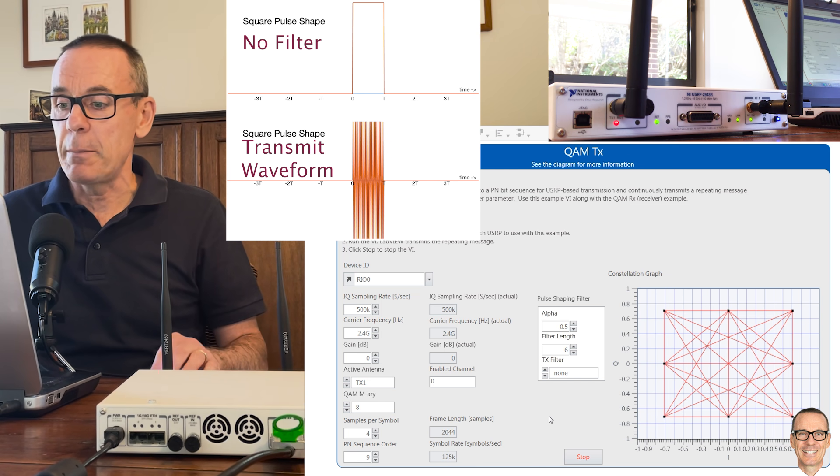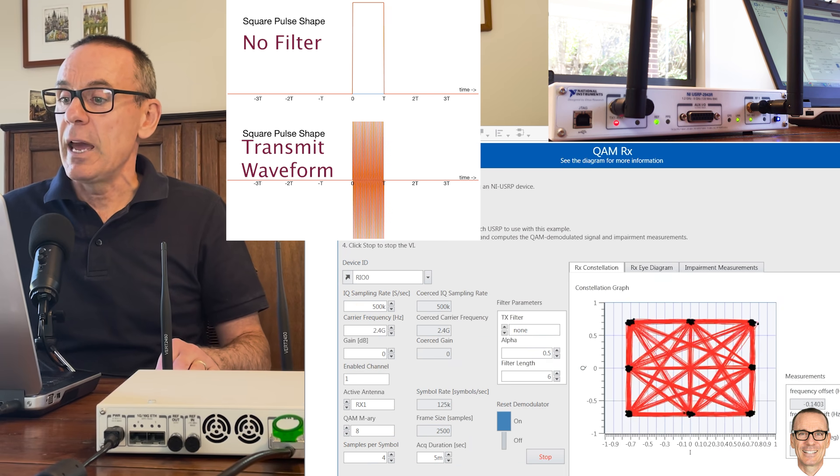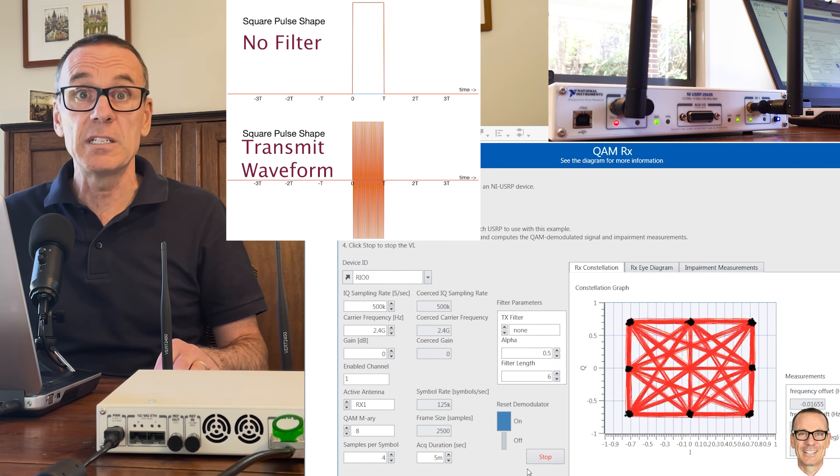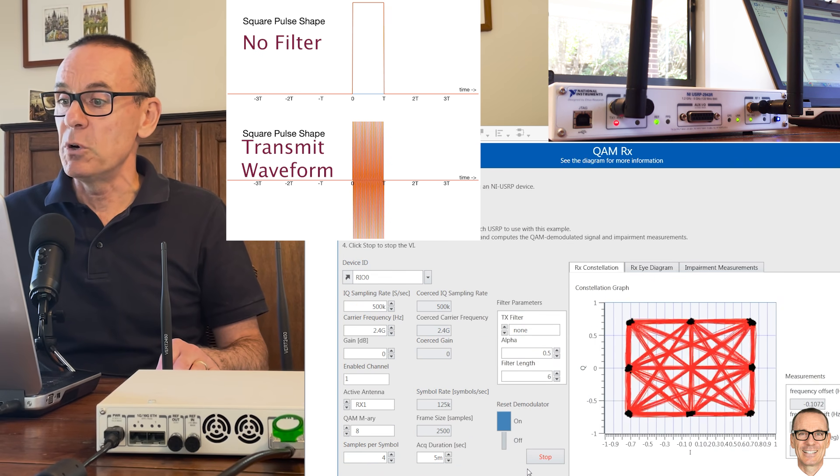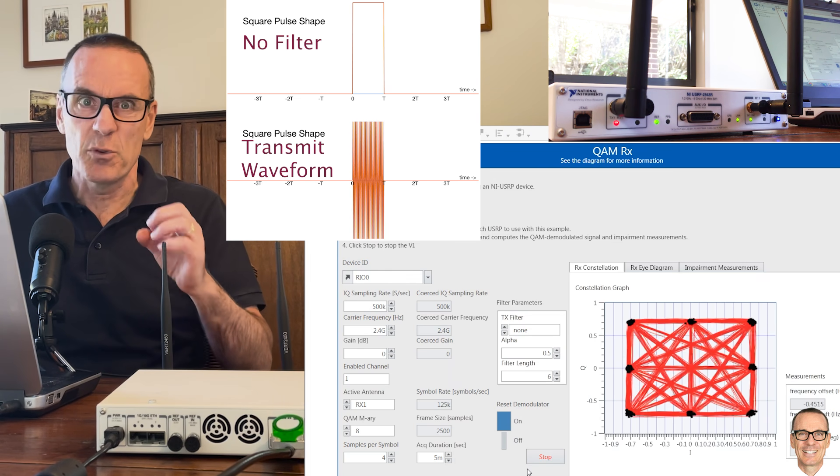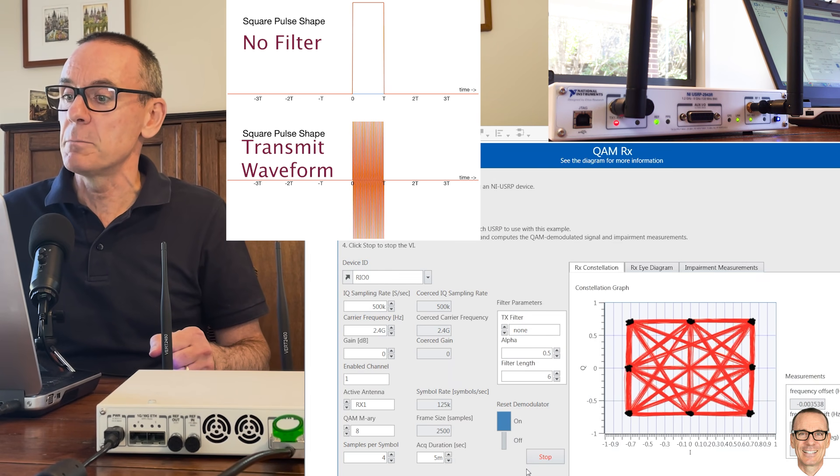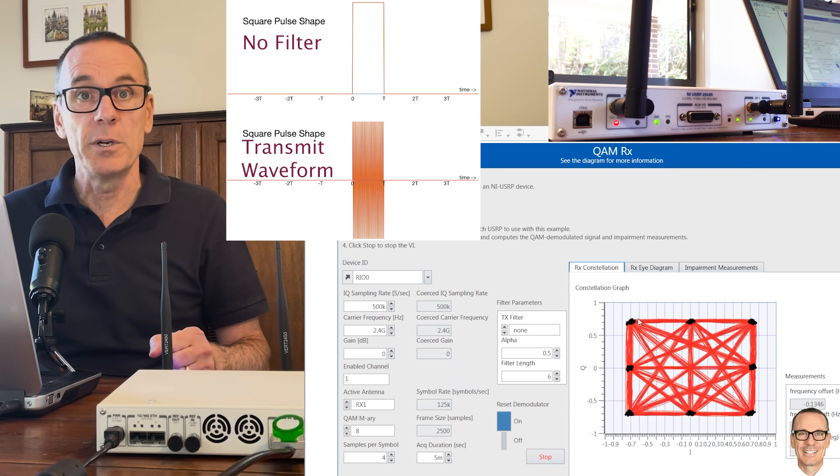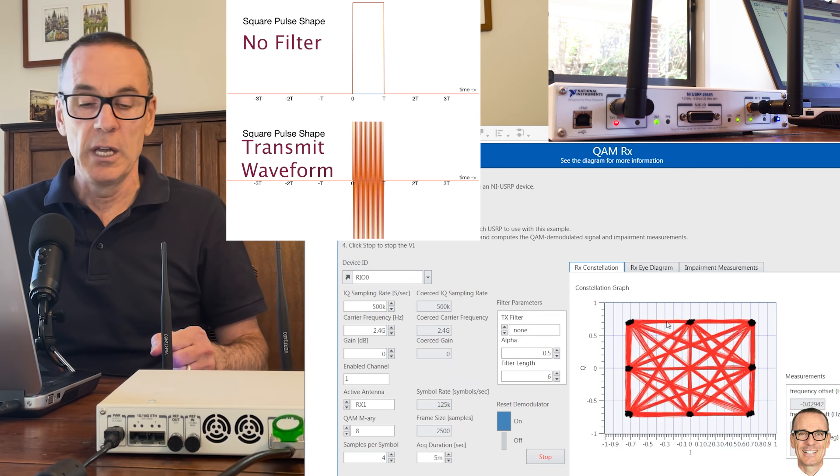So let's look at what's happening at the receiver and of course at the receiver there is noise. So the points are not exactly tightly located but still in this case they're pretty tightly clumped where they are supposed to be. So we're not going to be making any digital errors here.